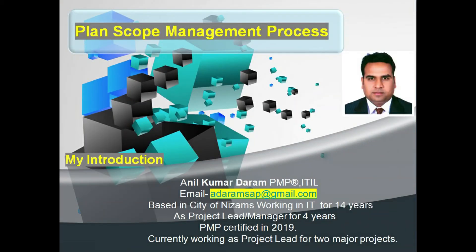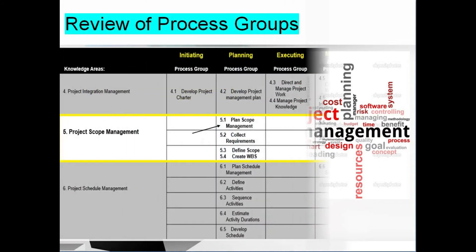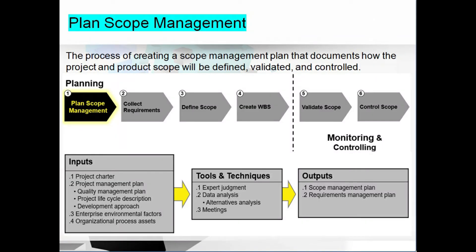Welcome friends. I am Anil Kumar Dharam explaining the plan scope management process in the scope management knowledge area. Plan scope management is defined as the process of creating a scope management plan that documents how the project and product scope will be defined, validated, and controlled. It provides guidance and direction on how scope will be managed throughout the project — acting like an instructor who guides the project for how scope will be managed during the course of the project.